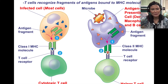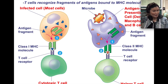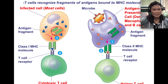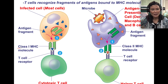The MHC protein is inside your cells. If a cell is infected with a virus, it will take a piece of the antigen and bring it together with the MHC molecule — in this case a class 1 MHC molecule — and show the antigen to a cytotoxic T cell specifically. So a body cell that is infected is going to show the antigen to a cytotoxic T cell.